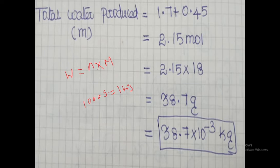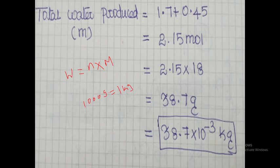To convert to kg, use: weight = number of moles × molecular weight. Total moles of water = 2.15 mol. Molecular weight of water = 18 g/mol. So total water = 2.15 × 18 = 38.7 g. Converting: 1 g = 10⁻³ kg, therefore total water produced m = 38.7 × 10⁻³ kg.